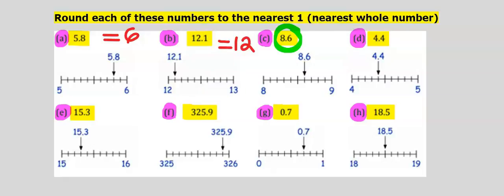8.6 is between 8 and 9 on the integer number line, considering halfway between them. Consider 4.4. 4.4 is in between 4 and 5 whole numbers, halfway between them. And our answer is 4.